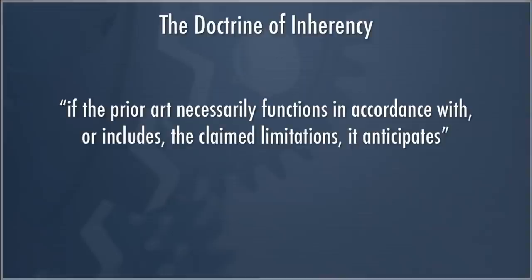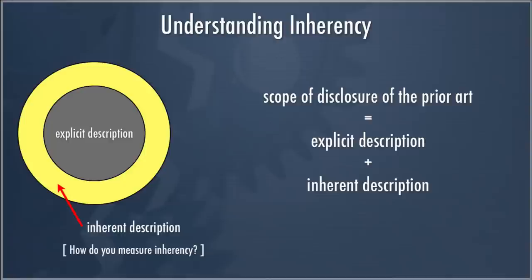Inherency can be tough to grasp. Think of it this way: every disclosure has a core of express description — what you read, what a person of ordinary skill in the art would read it to include — but every disclosure also includes a little more: its inherent content. That's the content which is there inherently, even if it doesn't say it's there. The scope of the prior art disclosure is a combination of both what is expressly described and what is inherently present.